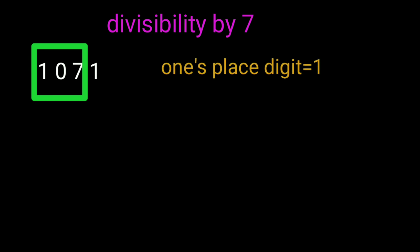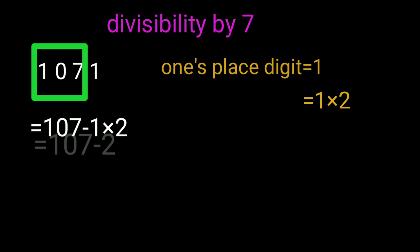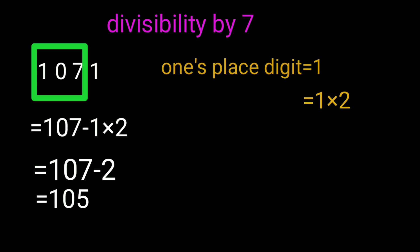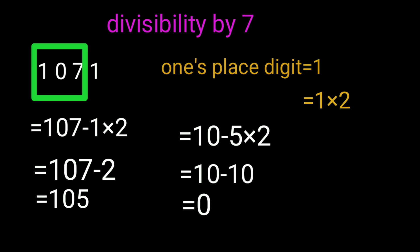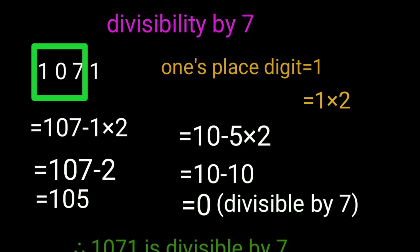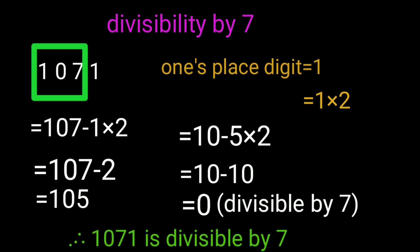Example: 1071. Ones place is 1. For 7, oscillator value is 2. So 1 into 2 equals 2. Rest of the number is 107. One-more oscillator: 107 minus 1 into 2 equals 107 minus 2 equals 105. Still not done, apply the same procedure. Ones place is 5, rest is 10. 10 minus 5 into 2 equals 10 minus 10 equals 0. Zero is divisible by 7, so 1071 is also divisible by 7.